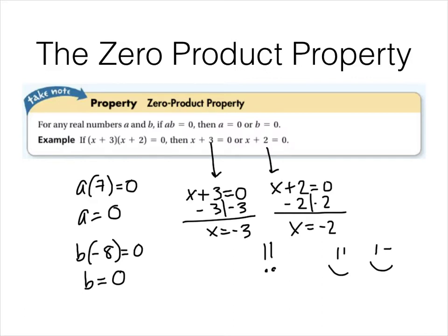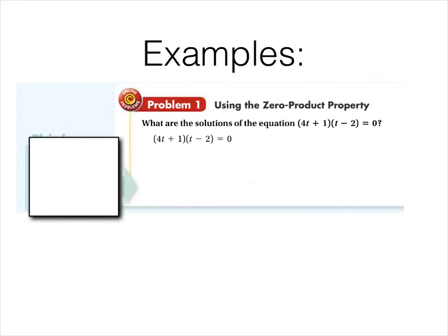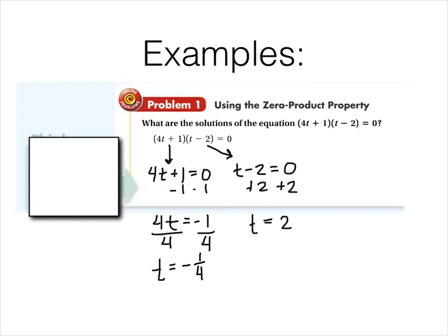Let's try some examples. Let's use that zero product property. This one is already factored for us, so let's solve it. We're going to take this and say four t plus one times t minus two. We're going to take each individual factor and set it equal to zero. Then you're going to solve. So this is four t equals negative one, and then divide by four. One value for t is negative one fourth. Add two, add two. The other value for t is positive two. So two solutions for this equation.